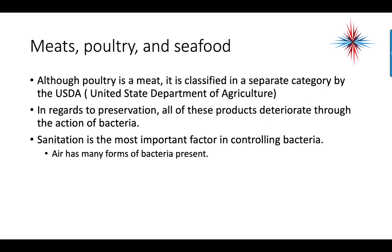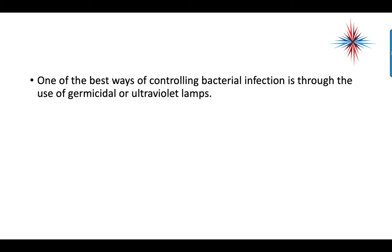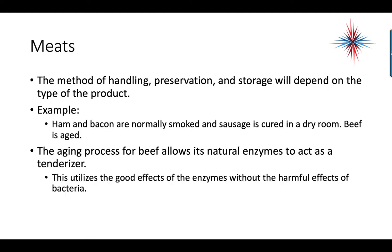For meat, poultry, and seafood — although poultry is a meat, it's classified as a separate category by the USDA, the United States Department of Agriculture. In regards to preservation, all of these products deteriorate through the action of bacteria. Sanitation is the most important factor in controlling bacteria. Air has many forms of bacteria present, and one of the best ways of controlling bacterial infection is through the use of germicidal or ultraviolet lamps. The method of handling, preservation, and storage will depend on the type of product. For example, ham and bacon are normally smoked, sausage is cured in a dry room, and beef is aged. The aging process for beef allows its natural enzymes to act as a tenderizer, utilizing the good effects of enzymes without the harmful effects of bacteria.